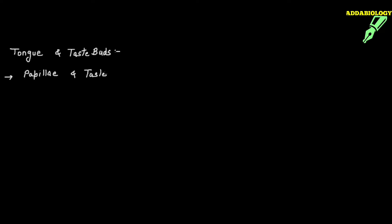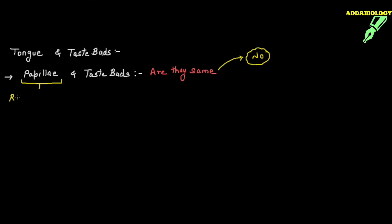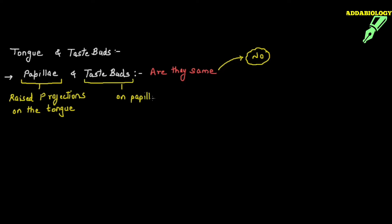The first problem students face is the difference between papillae and taste buds. They are always confused — are papillae and taste buds the same? The answer is NO. Taste buds and papillae are not the same at all. Papillae are the raised projections on the tongue. On those papillae, you get the taste buds. So not all papillae will have taste buds, but papillae are present on the entire tongue. Let's see the diagram.